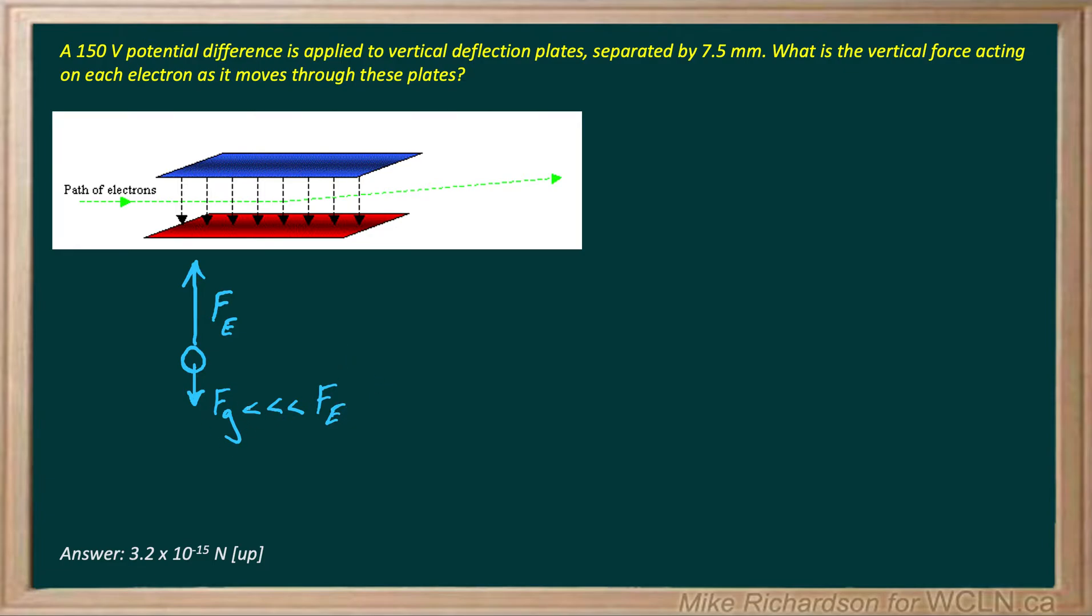So we're not going to worry about the force of gravity when we talk about electrons. It has to have some significant mass to it for that gravitational force to have any bearing. If you included it, it wouldn't change your answer one bit. It would be correct, you could do it, but it wouldn't change what your final answer would be. So we're going to just focus on the electric force.